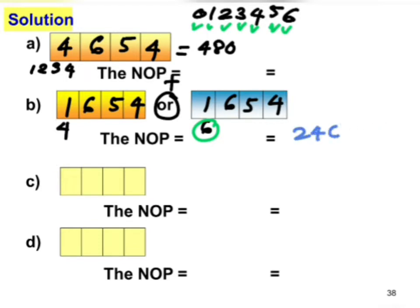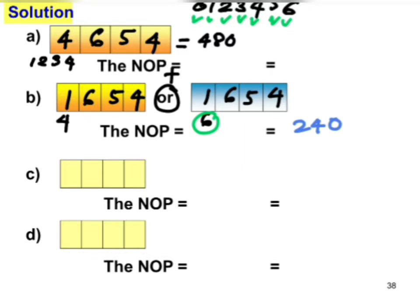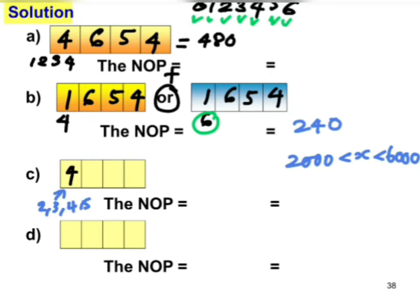For question (c), we want the number to be between two thousand and six thousand. The digits that can occupy the first place are two, three, four, and five — four options. Taking one number out leaves six, then five, then four for the remaining places. Multiplying gives 480.